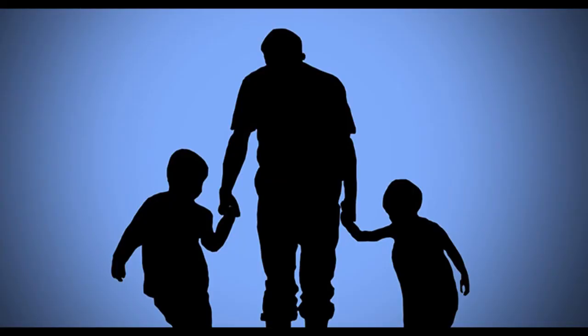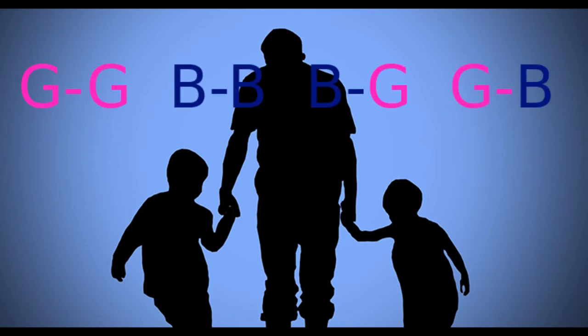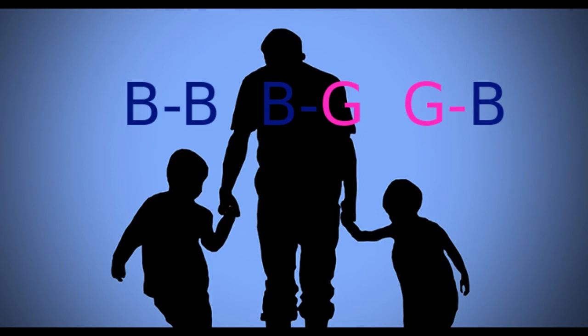Mr Smith is twice as likely to have a son and a daughter as he is to have two sons. The proof of this is straightforward. When a couple have two children, there are four possible outcomes: they could have a girl followed by another girl, a boy followed by another boy, a boy followed by a girl, or a girl followed by a boy. We know that one of the Smith children is a boy, so we can discount the two-girl possibility. So we're left with three equally probable outcomes, of which two boys is only one.